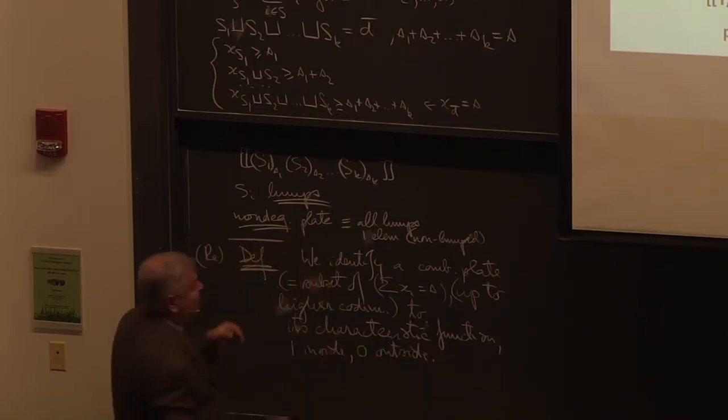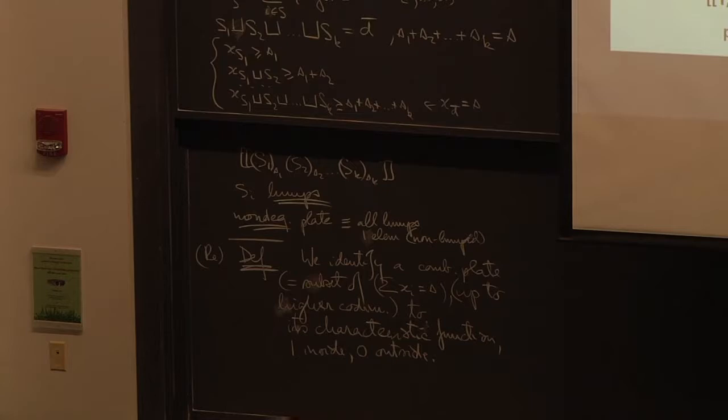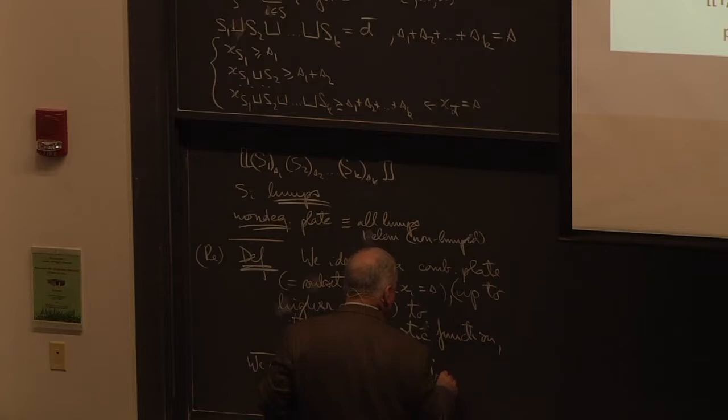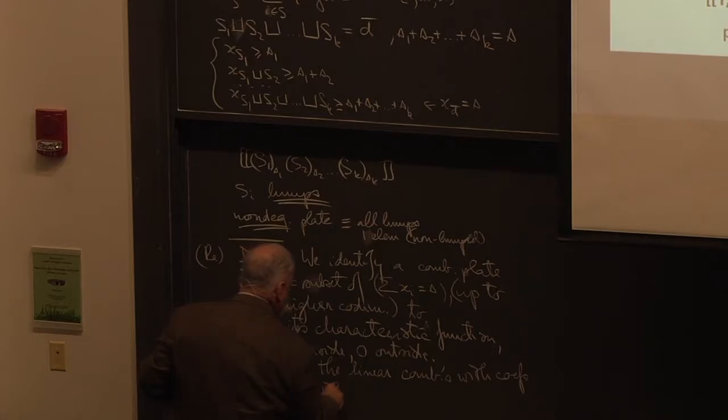So, it's 1, where the equations are satisfied, and 0, where they're not. So, what we are studying is linear. We study the linear combinations with coefficients in, well, depending on our context in Z, R, or C of plates.